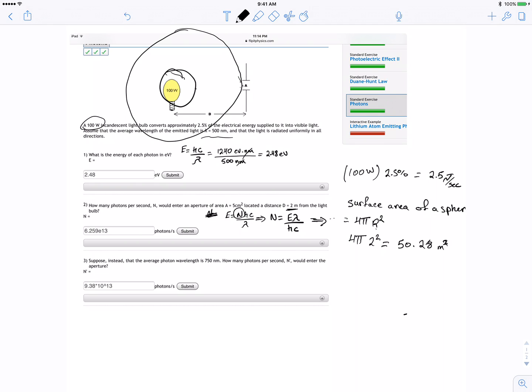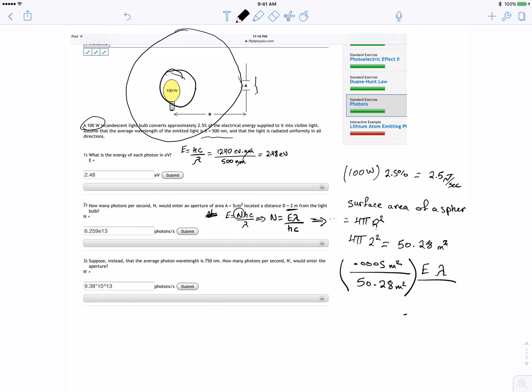And we have the area of this small hole, which is only 0.0005 meters squared. This is a small area. So we'll divide that by 50.28 squared, then we'll multiply this by the number of photons, so E lambda divided by hc.